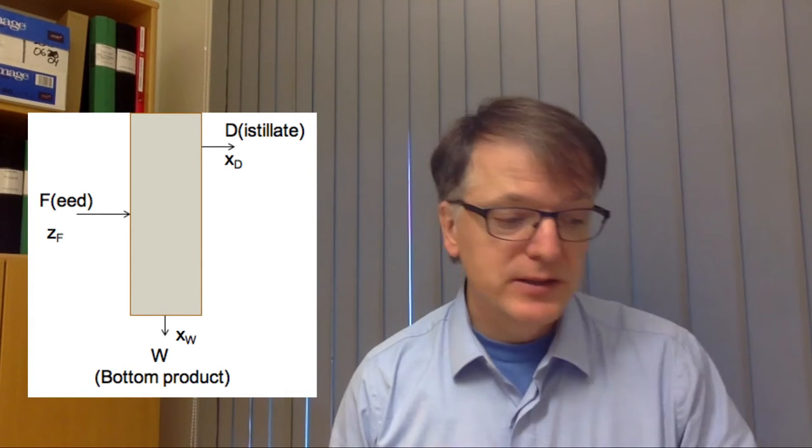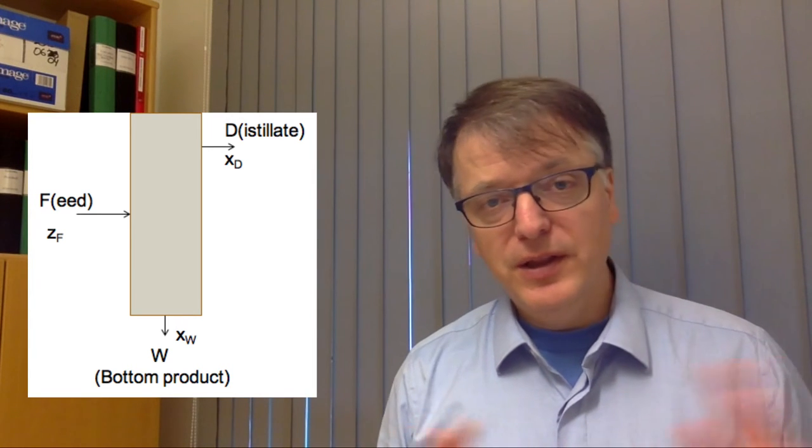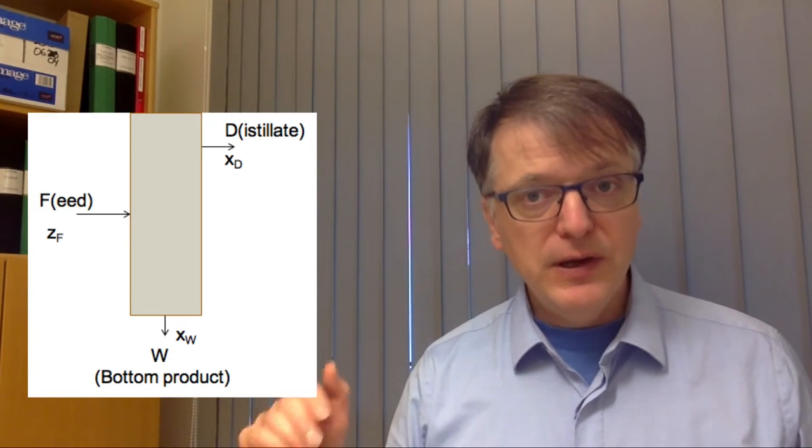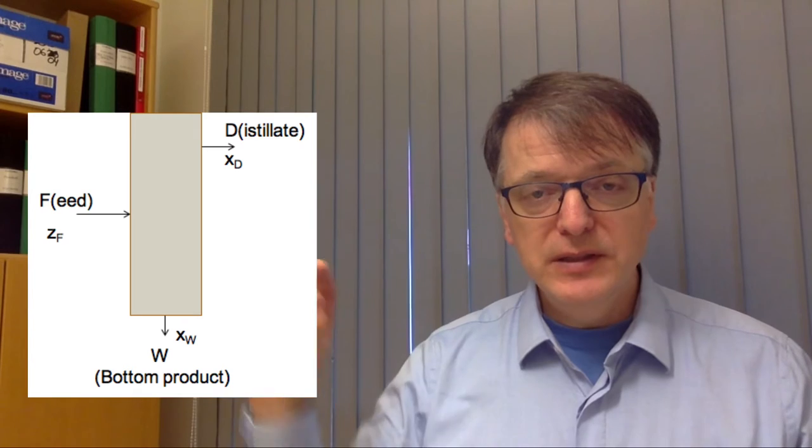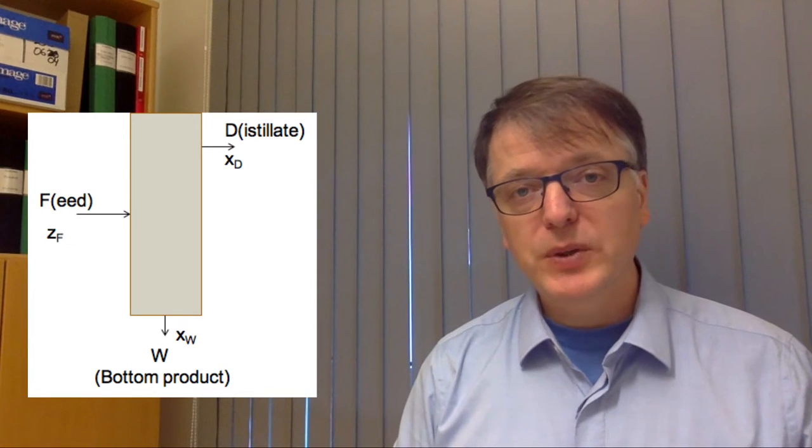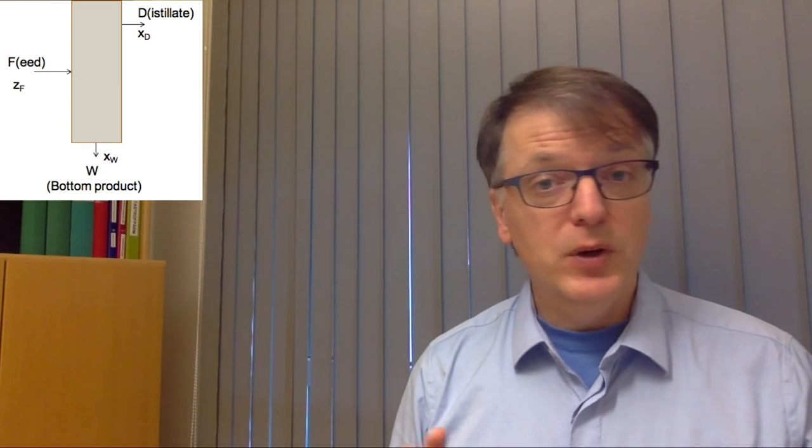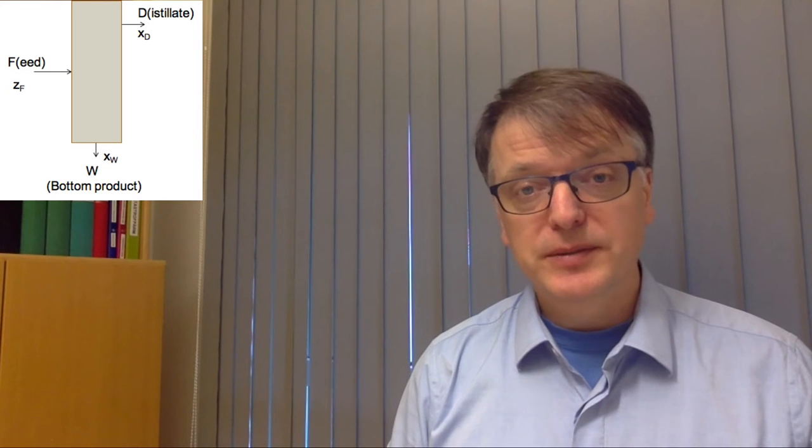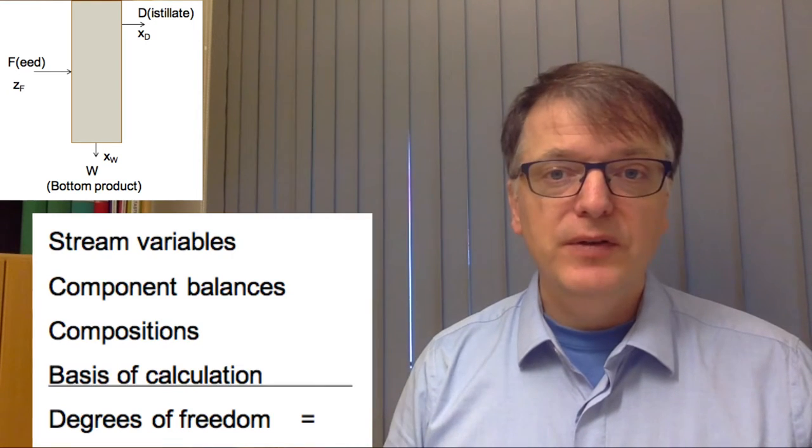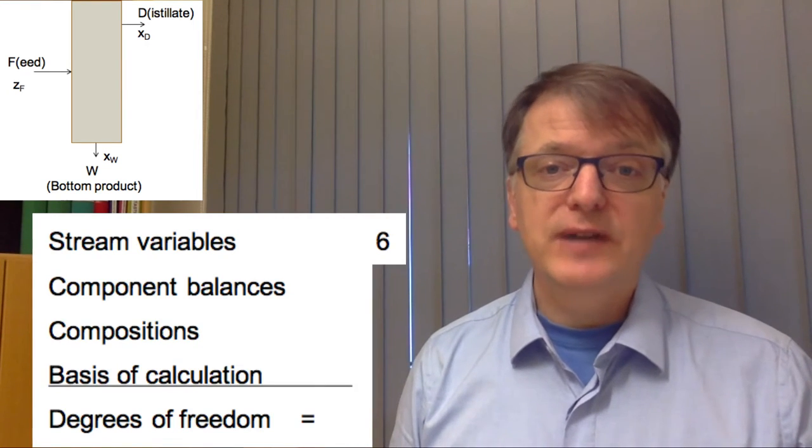Okay, I hope you tried this yourself. Let's think this through. You have three different flows: you have the feed, you have the distillate, and you have the bottom product. In all three flows you have two components. So this means that you have in total six stream variables.